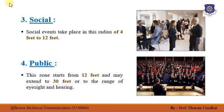And last comes the public zone. This zone starts from 12 feet and may extend to 30 feet or to the range of eyesight or hearing. Events in this zone are formal. The audience is free to do whatever it feels like. The speaker has to raise his voice or use a microphone to communicate. Speakers like the Prime Minister of the country have to maintain this distance for security reasons. Thus, proxemics includes intimate, personal, social, and public zones.